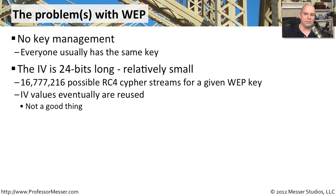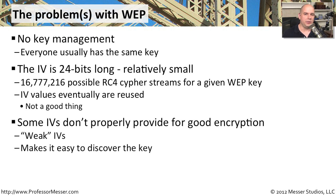If you do the math for that RC4 cipher stream, you have a WEP key that can be one of 16,777,216 possible iterations. That's not a lot in the big scheme. And those initialization values can also be reused as traffic goes across your network — for a person trying to do decryption, that's fantastic, but for those of us that want to keep our data private, it isn't good. Some of these initialization values don't provide very good security; some IVs have been found to be weak. They don't provide as good an encryption as other initialization values might. Later on, manufacturers stopped using those particular weak IVs, but at the very beginning we were using all of them, and that made it much easier to discover what the wireless key was.